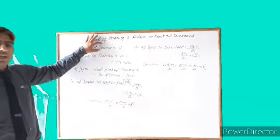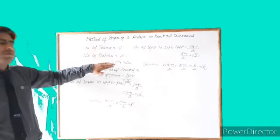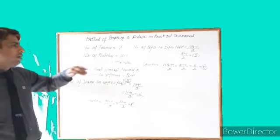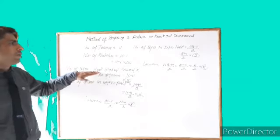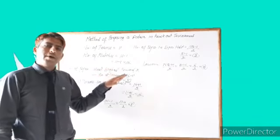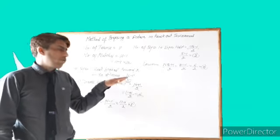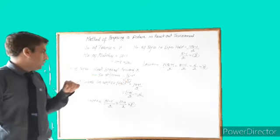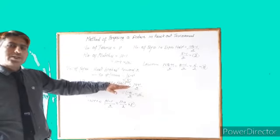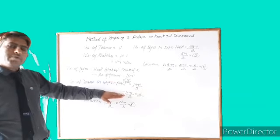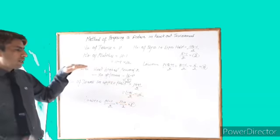To recap: we have 11 teams. The number of byes is the next highest power of 2 minus the number of teams, which is 16 minus 11 = 5 byes. The number of teams in the upper half is (n+1)/2 = (11+1)/2 = 6 teams in the upper half, with the remaining 5 teams in the lower half.